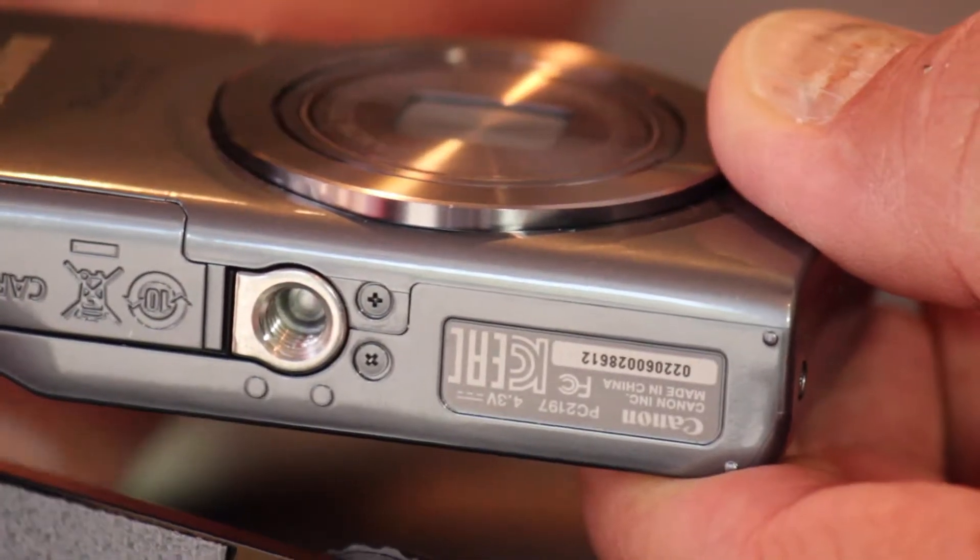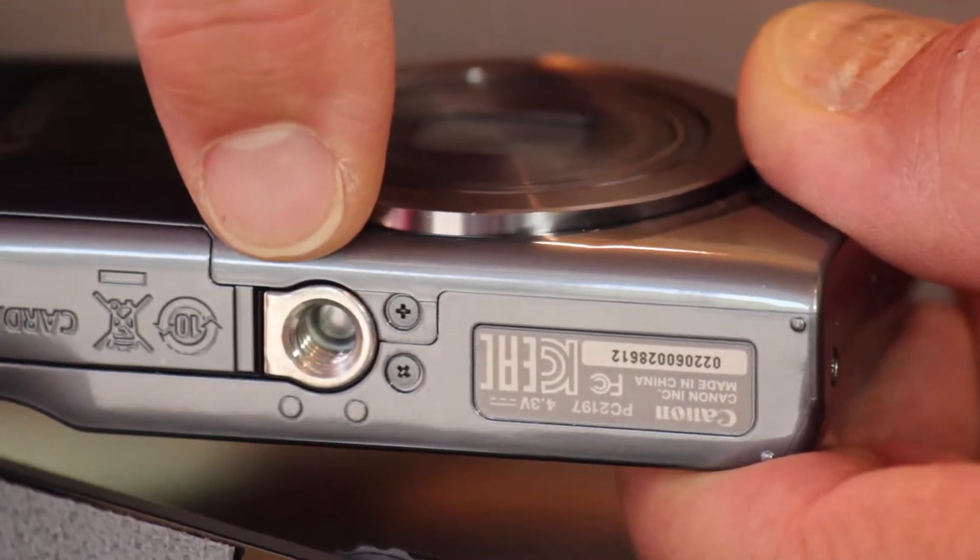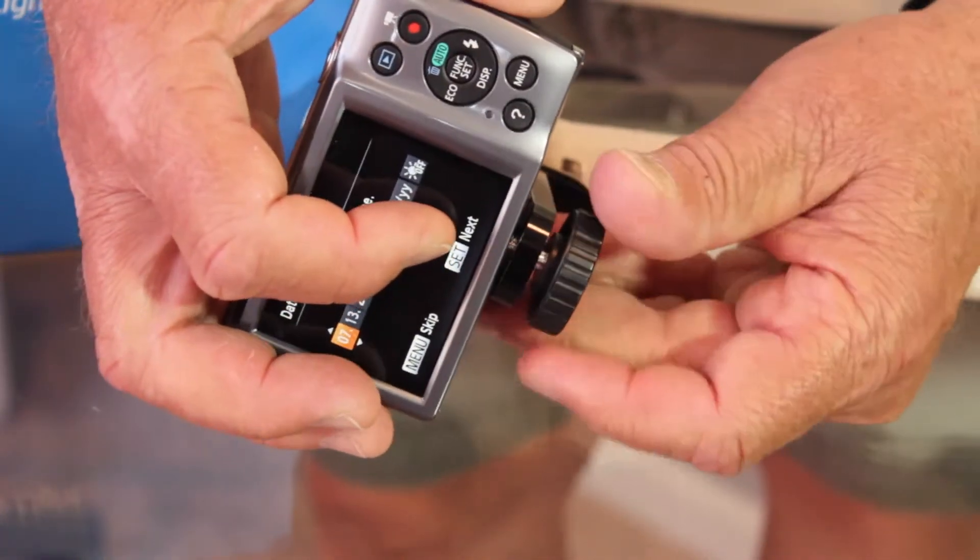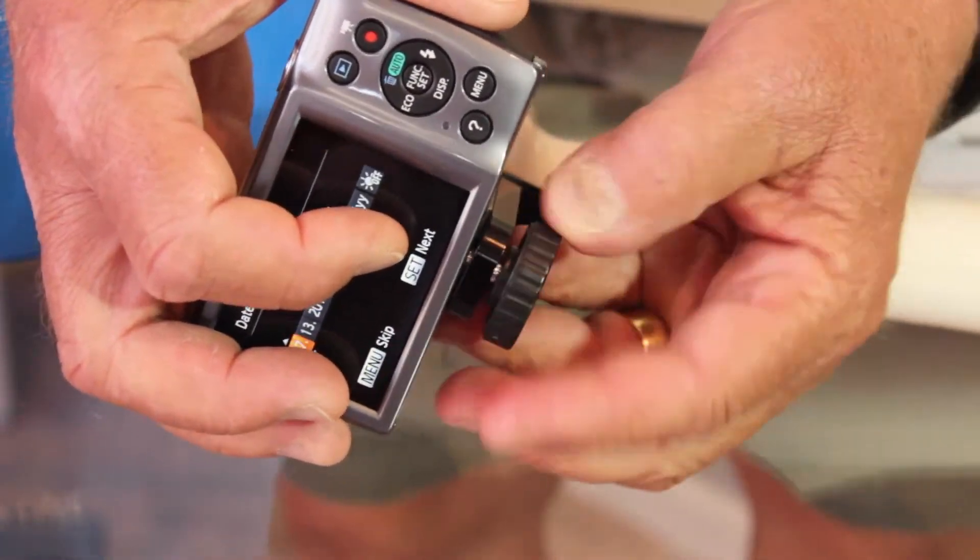On the bottom of your camera, you will see that you have a tripod hole. You will line that tripod hole up and screw it in place with the big thumb screw on the adapter.